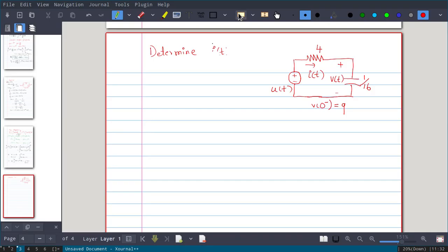In this video we will solve this problem: determine i(t) for this circuit. We have a voltage source u(t), one capacitance 1/16 farad, and initial voltage across capacitor v(0-) is 9 volts. The current passing through this is i(t) that you have to determine.